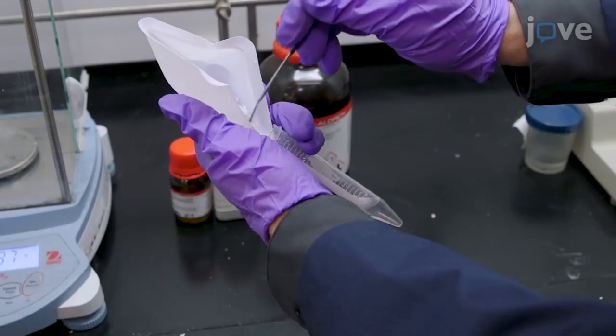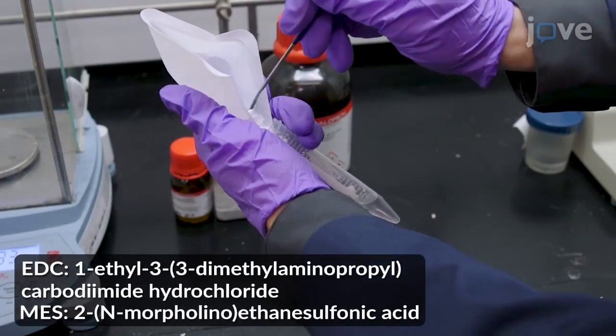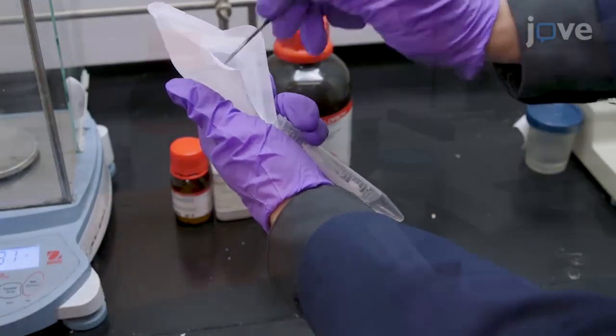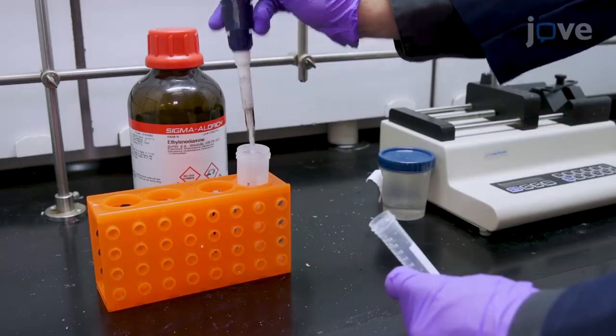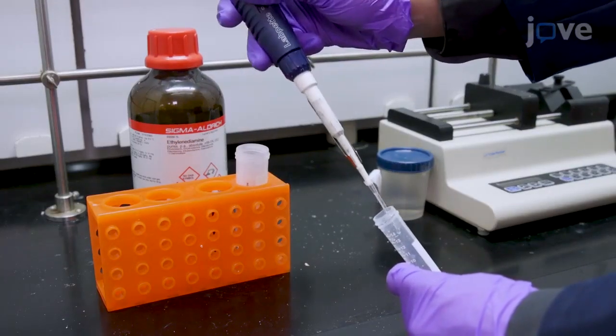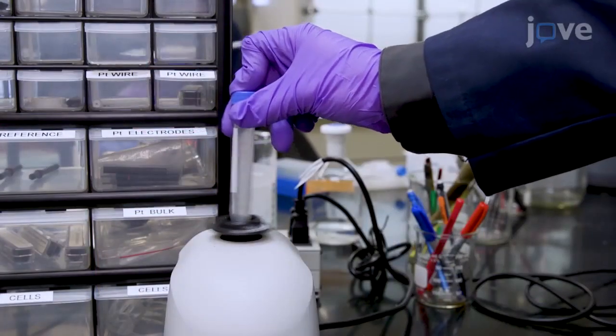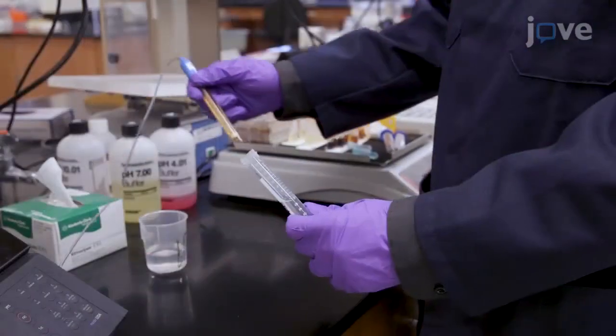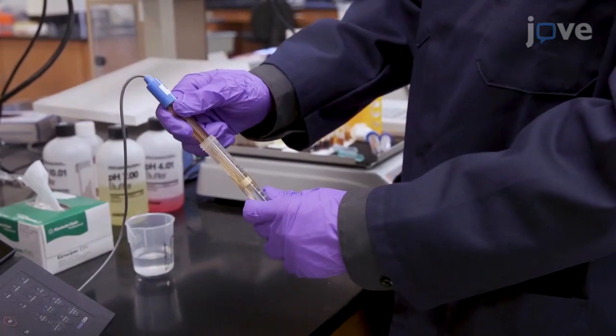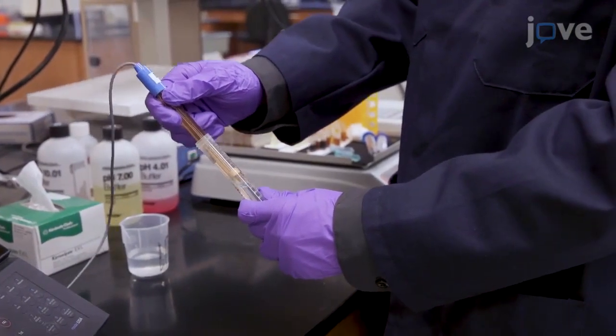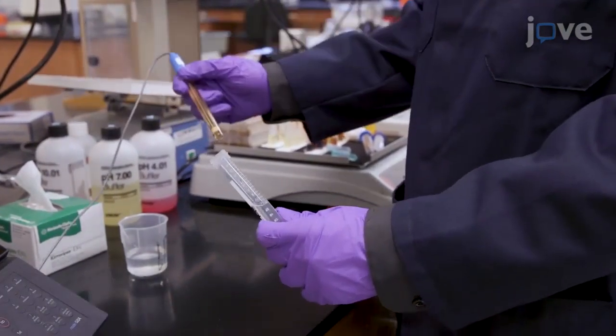The next morning, add 0.959 grams of ADC and 0.195 grams of MES buffer to 2.833 milliliters of deionized water. Then adjust the final volume to 10 milliliters and a pH of 4.5 with 1 molar hydrochloric acid and deionized water.